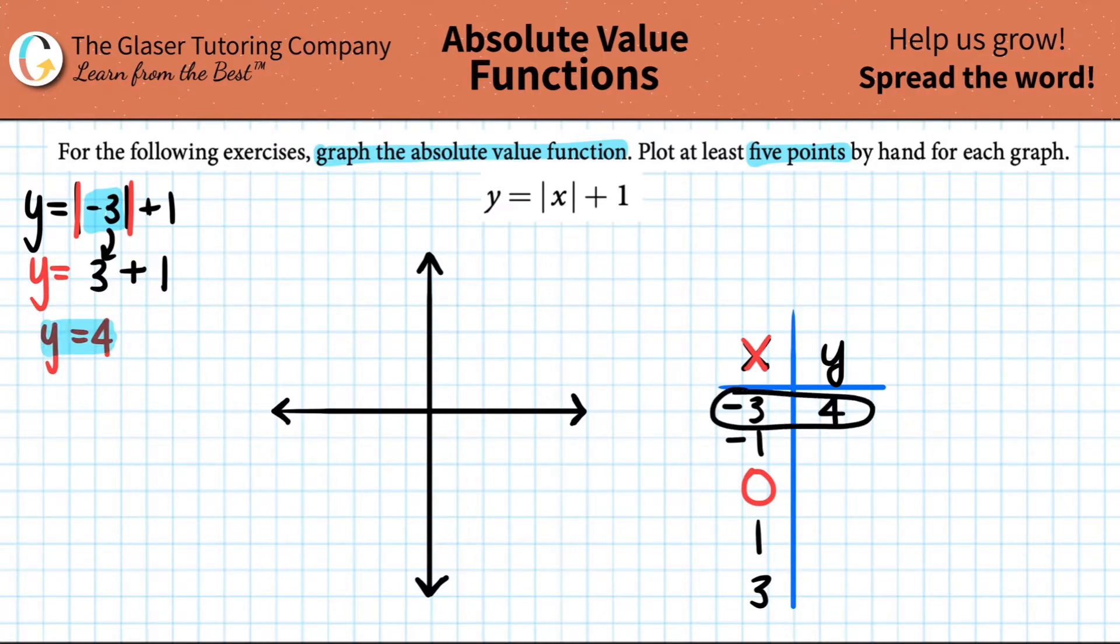So that goes over here. I have a point at negative three comma four. Now I have to do the same for the next X, and we just keep going until we have done all five. So absolute value of negative one plus one. We got to do the absolute value first. The absolute value of a negative always turns into a positive. So this would just be one plus one. So one plus one is two, and that's the Y coordinate for the second one. So we have a Y of two now. So here are your two points so far.